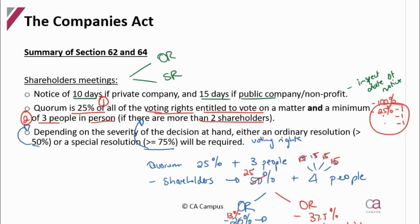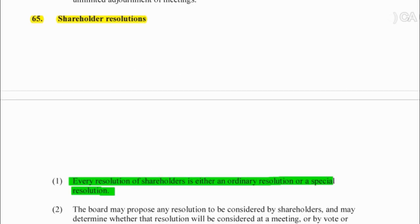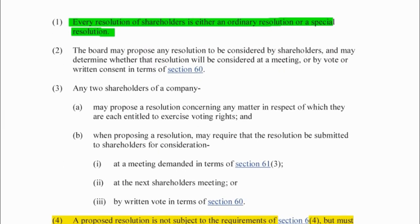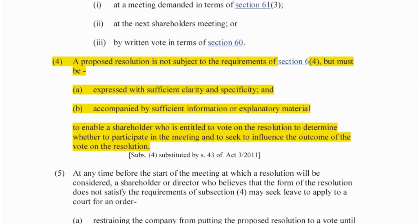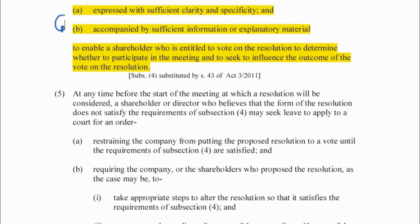Inspect that 75% of the voting rights present voted in favour of that decision — so 3 marks here for working through notice, quorum, and the specific decision itself. Section 65: every resolution of a shareholder is either an ordinary or a special — only those two decisions are passed. The least stringent requirement is an ordinary resolution, which is greater than 50%, which is majority. There must also be sufficient information accompanying that resolution explaining why the decision was made.